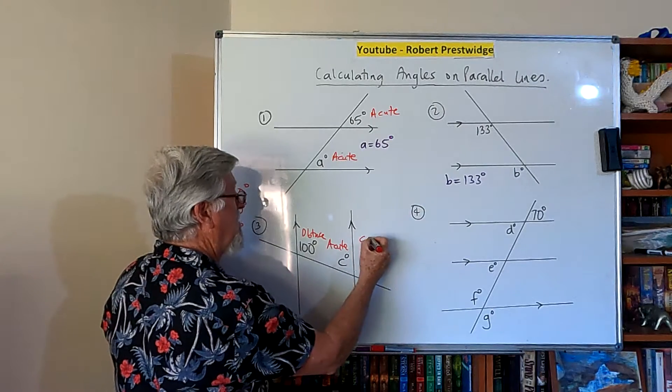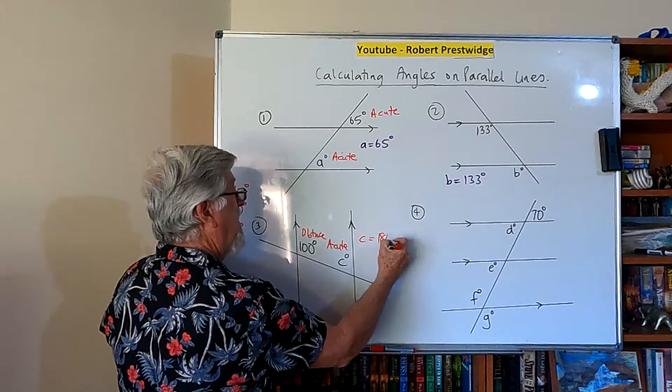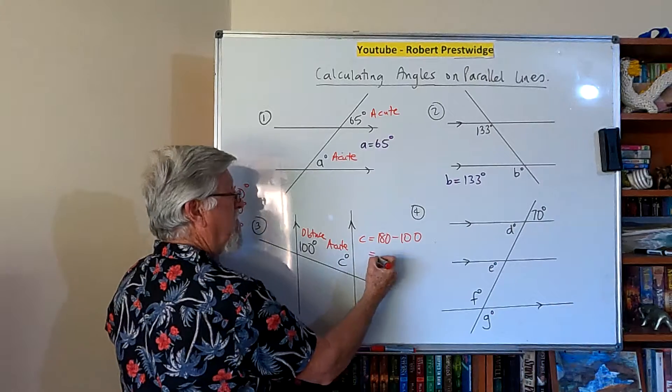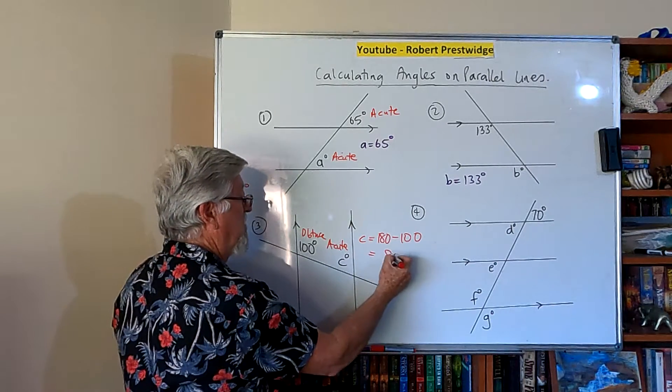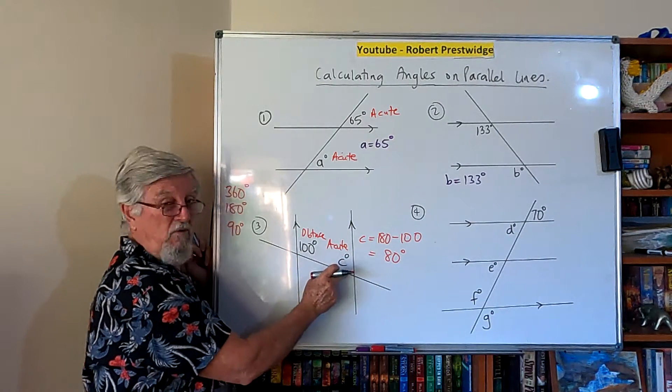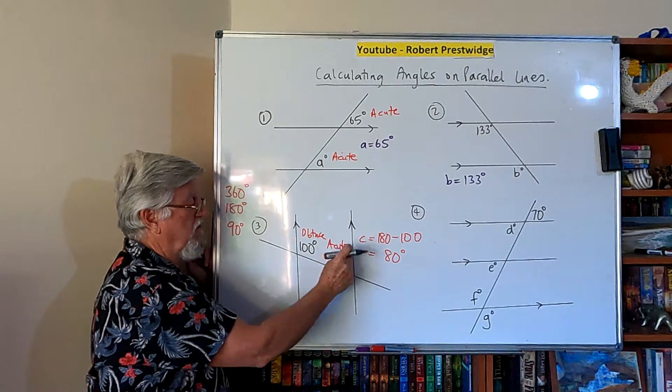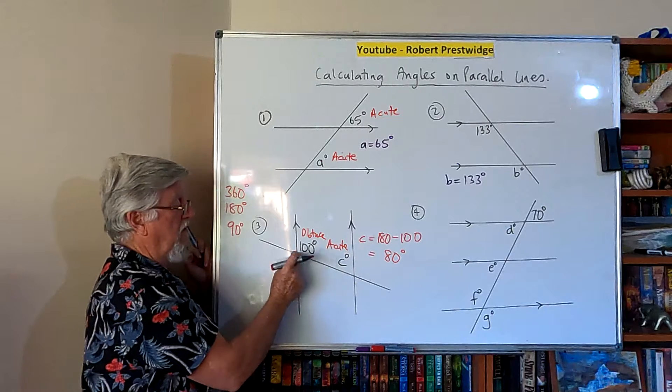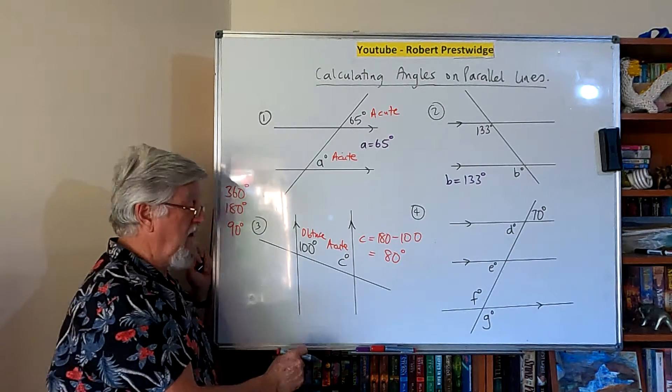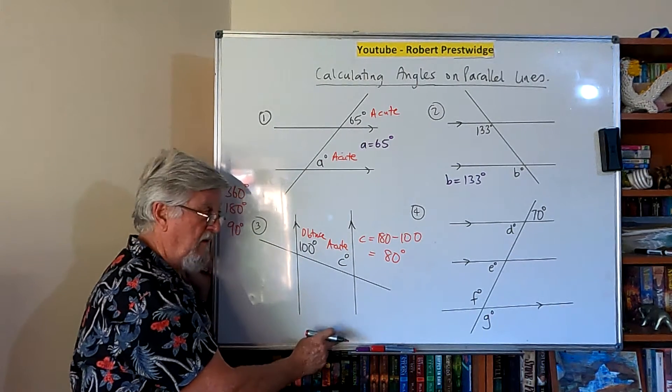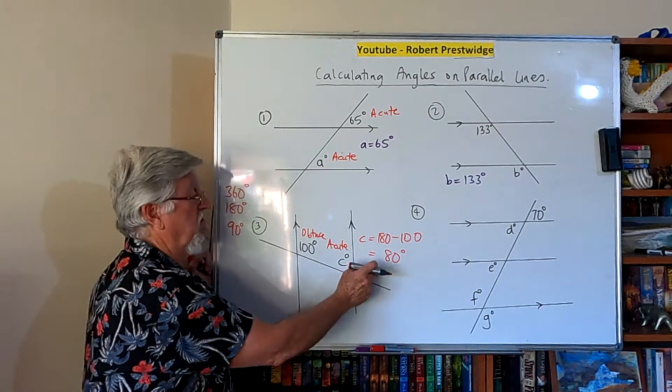So on this one, I can just go C is 180 minus 100. And really easy one to do. And that's just 80 degrees. The obtuse and the acute, if I made a paper version of that, and if I cut that corner out, and I cut that corner out, and I put them together, they will actually make a straight line. But I'm not going there now, I don't have time at this stage to do that.